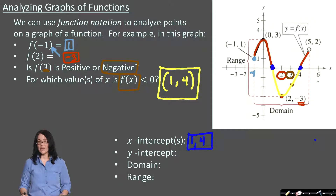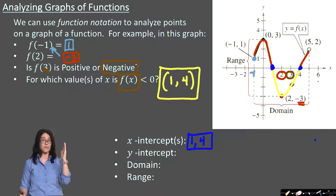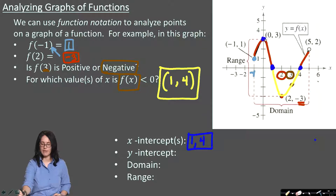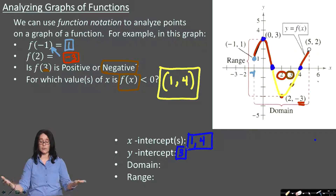What about the y-intercept? That's going to be any point on the graph which is on the y-axis, and if it's a function, there can only be one — because two points on the y-axis would fail the vertical line test. I do see a y-intercept at (0, 3), so it's the y-value of 3. You could simply say y equals 3, or write the point as (0, 3).